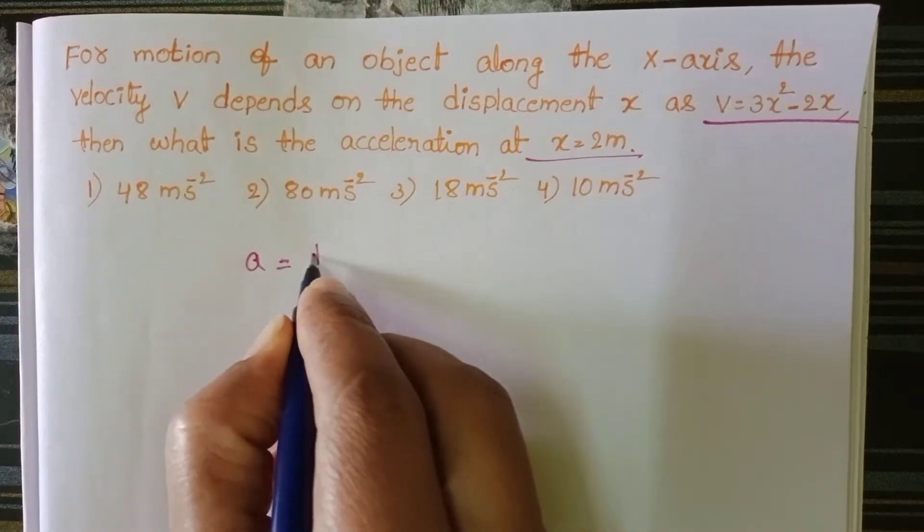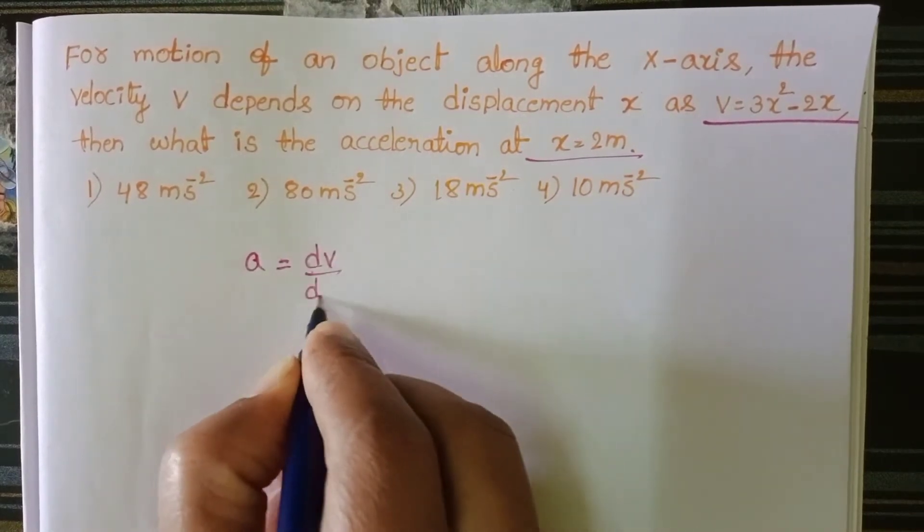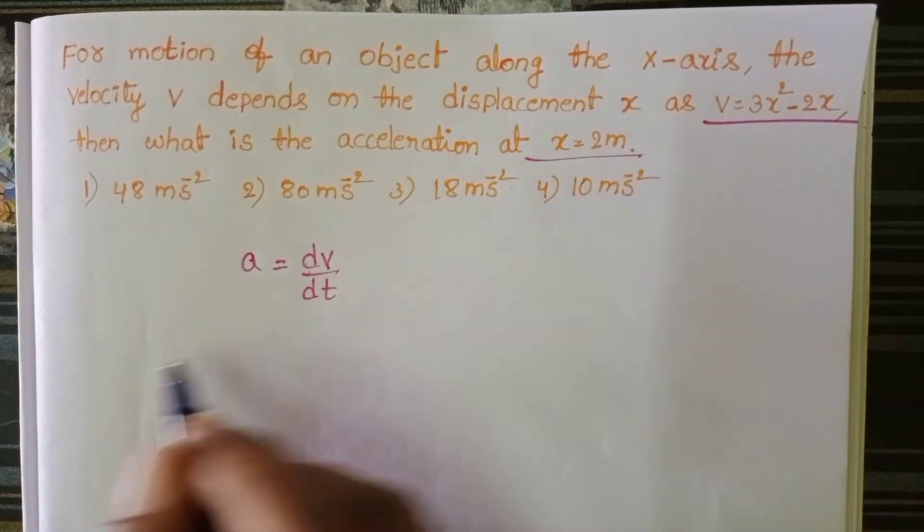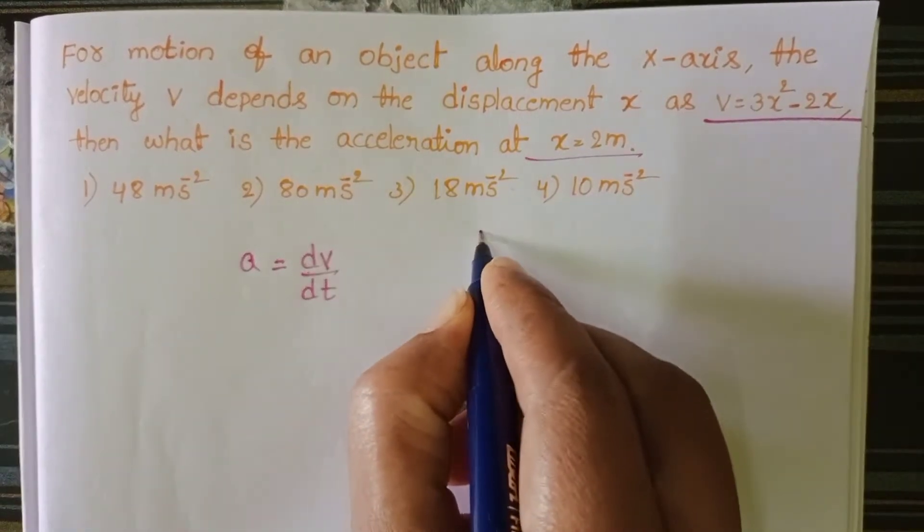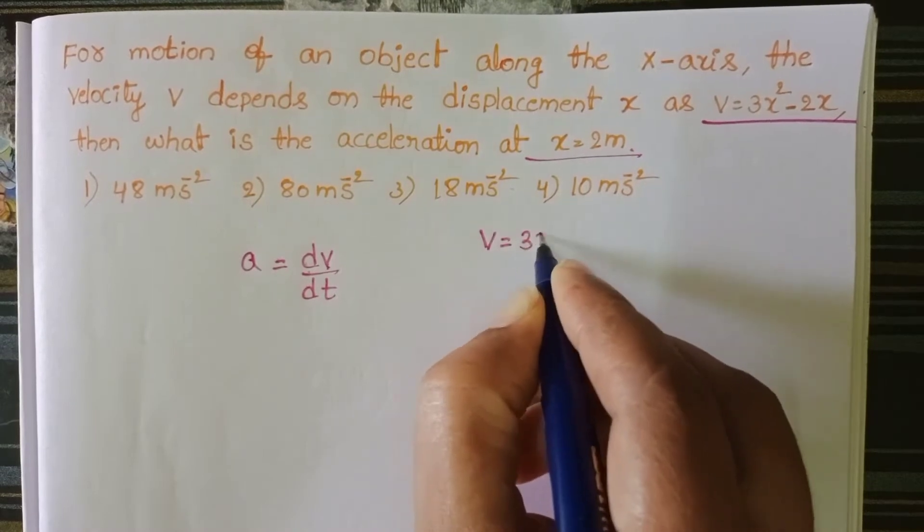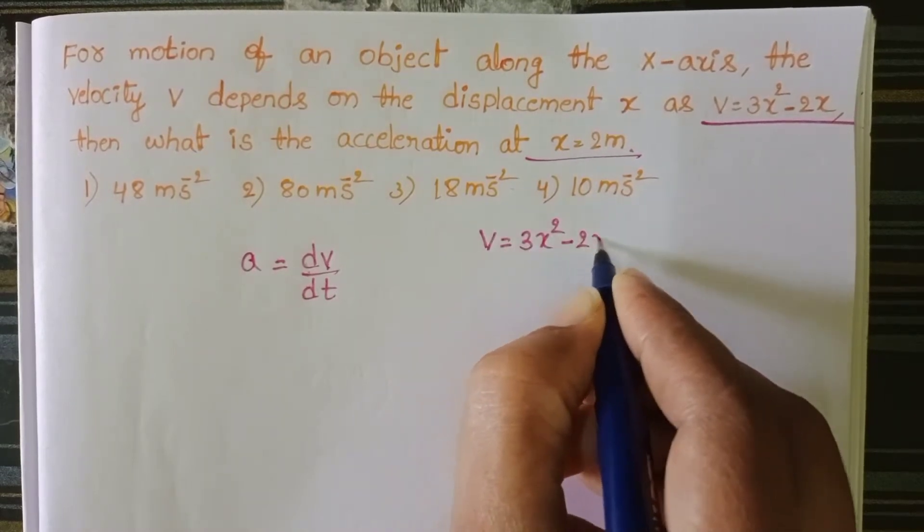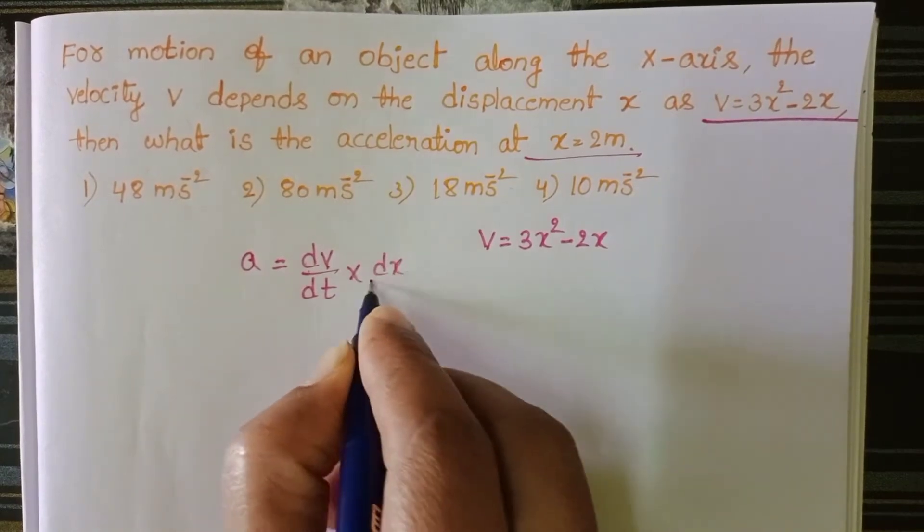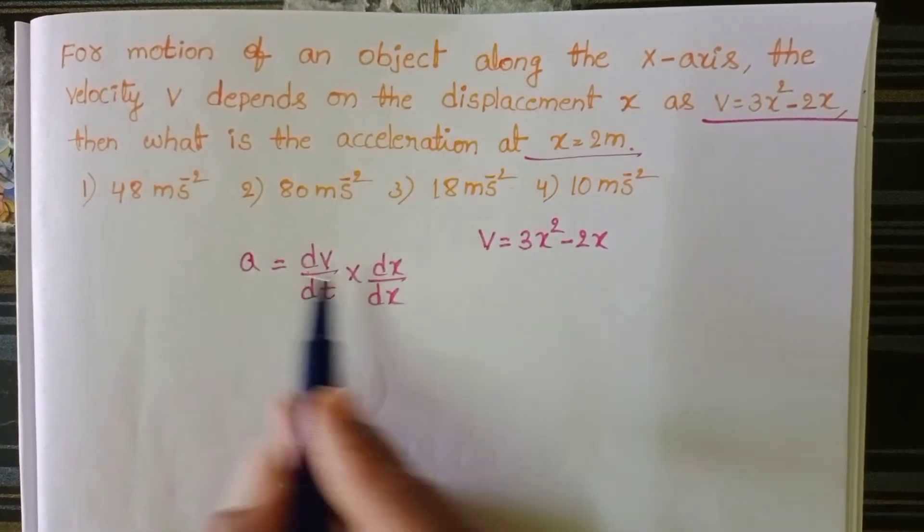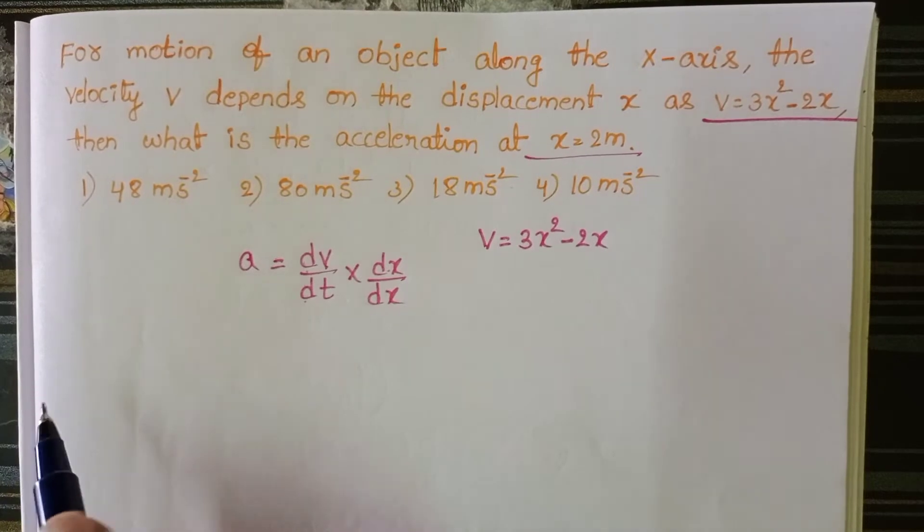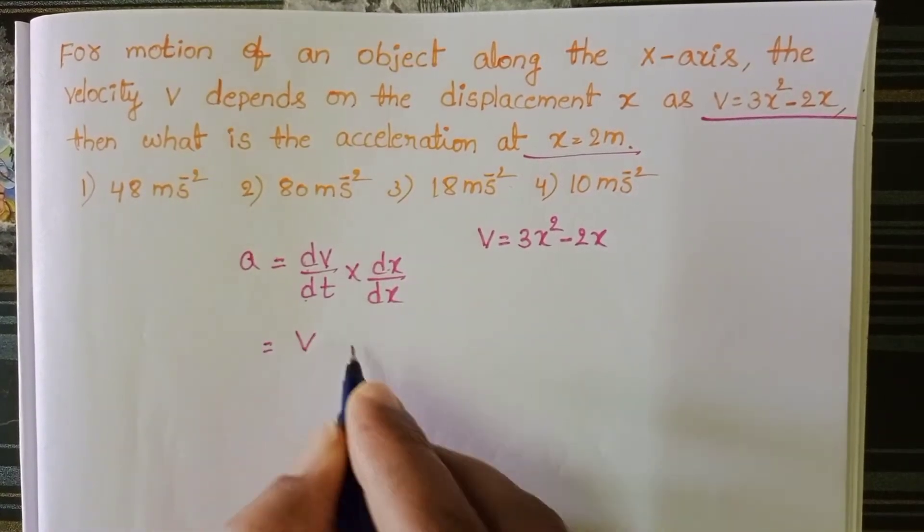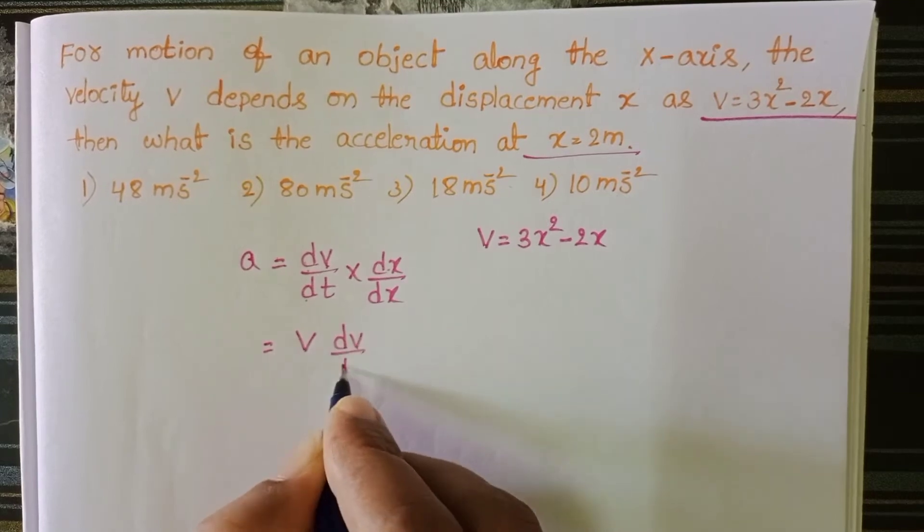Rate of change of velocity is called acceleration. But here velocity as a function of displacement v equals 3x square minus 2x. So multiply and divide with dx, dx by dt. Rate of change of displacement is called velocity. So v into dv by dx.